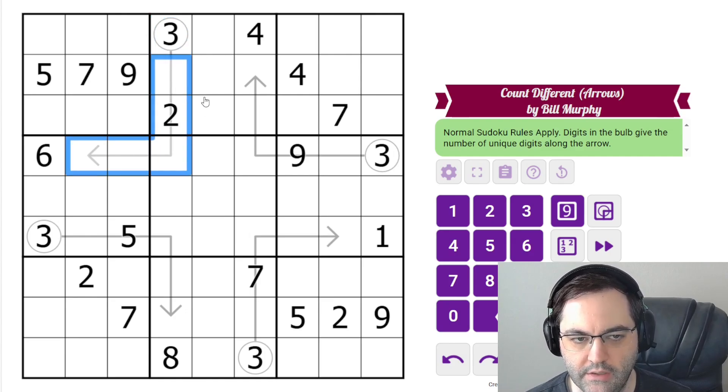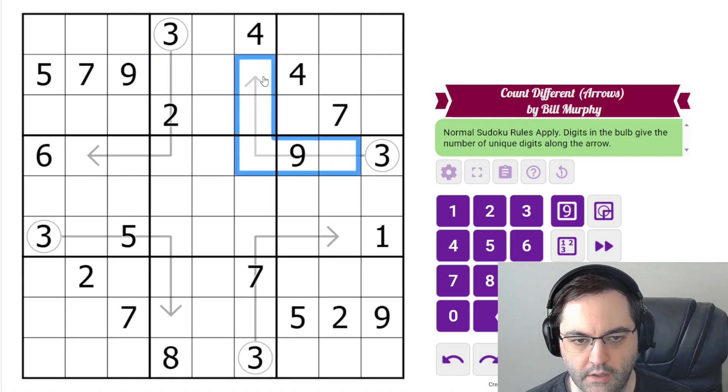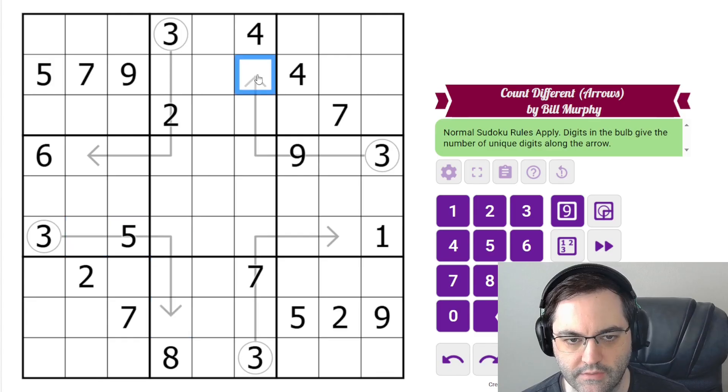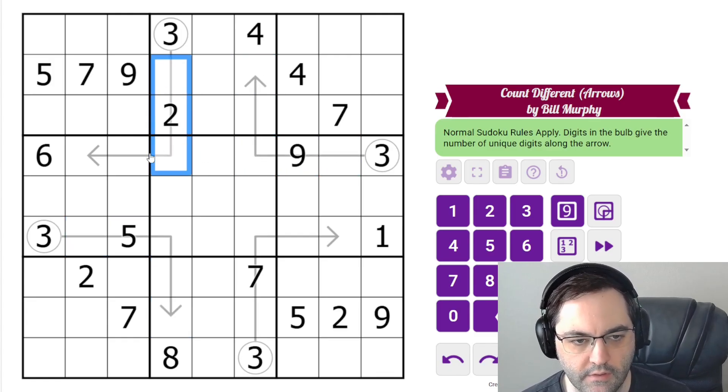So there are three different digits on this arrow, exactly three. And all of these are three. So three distinct digits in each of these arrows. And those are the rules.